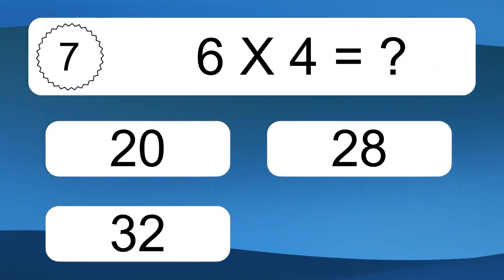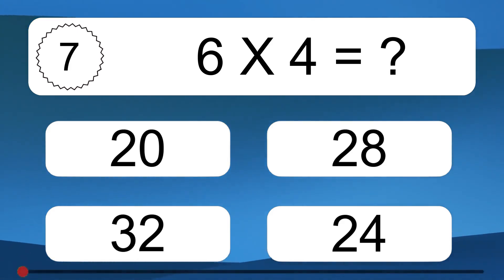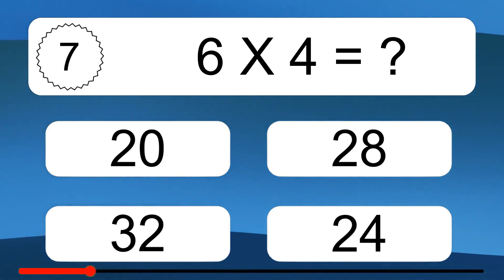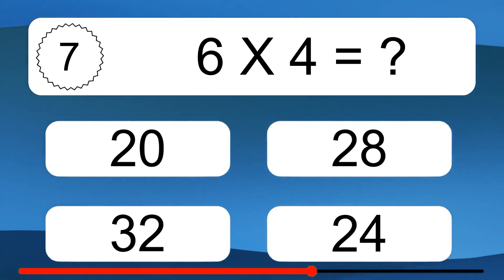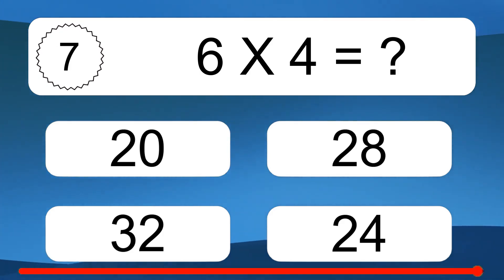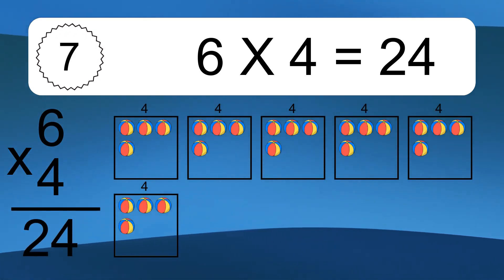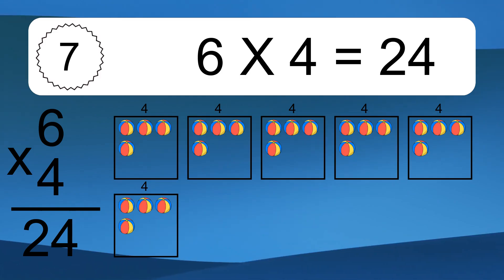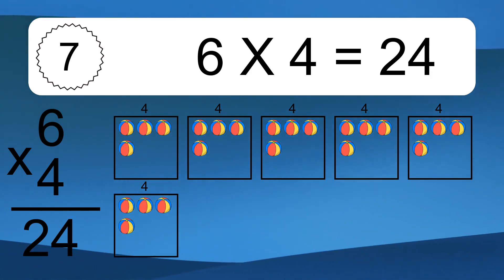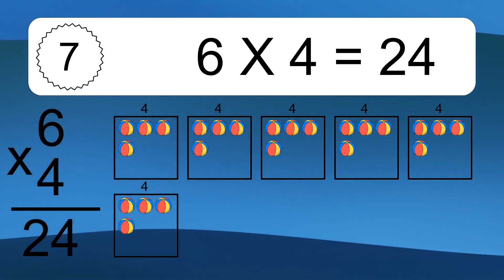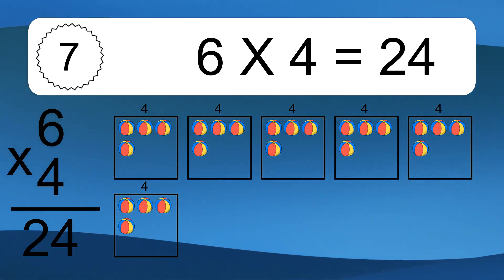6 times 4 equals what? 6 times 4 equals 24. We have 6 boxes, and each box has 4 colorful balls inside. If you count all the balls in all the boxes together, you will have 6 times 4 balls. This equals 24 balls.